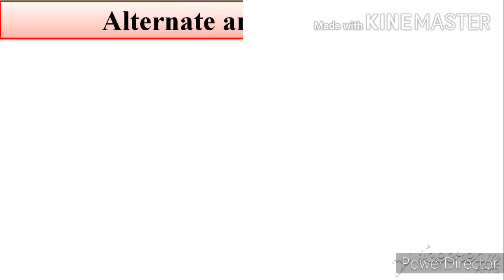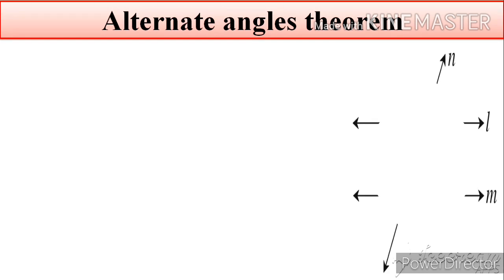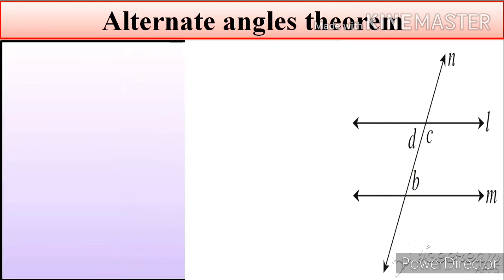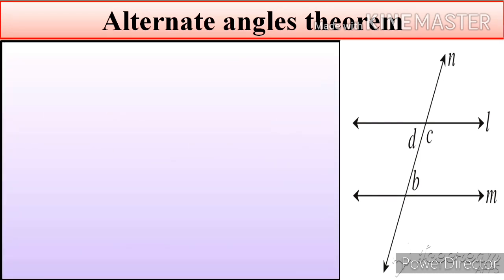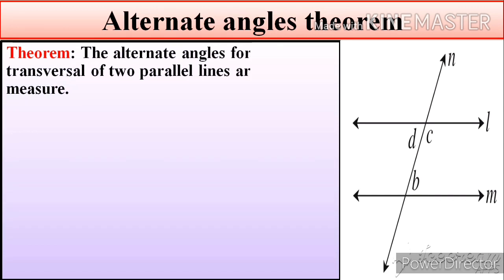Now, students, we are going to see the Alternate Angles Theorem. The theorem states that the alternate angles formed by a transversal of two parallel lines are of equal measure.